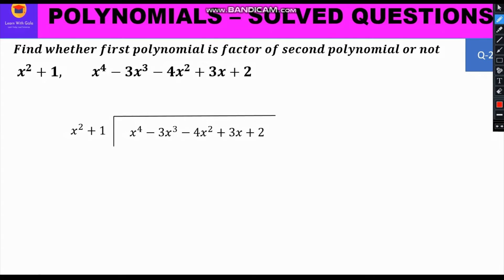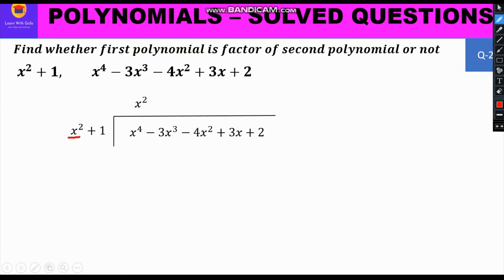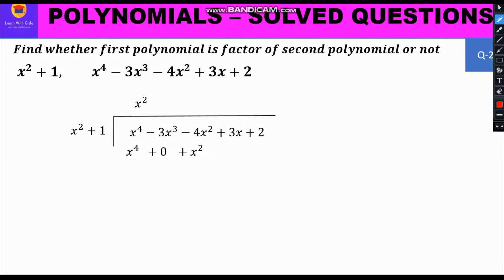For the first step of division, we take x⁴ and divide by x², giving quotient x². Another way: x² × x² = x⁴. Moving to multiplication: x² × x² = x⁴ and x² × 1 = x². We write this product below the like terms, so x⁴ goes below x⁴ and x² goes below -4x², leaving -3x³ in between.